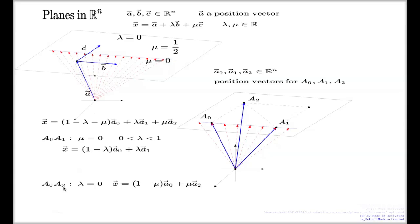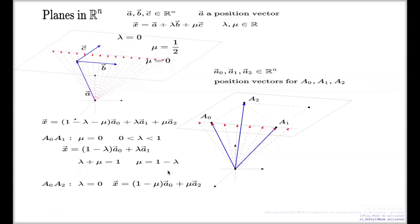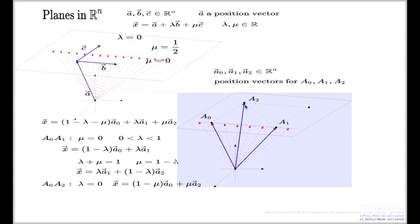To get the parametrization for line a1a2, we need to vanish the first bracket, which requires setting λ+μ=1. Solving that restriction for μ and substituting into the general equation gives the convex parametrization of the line through a2 and a1.